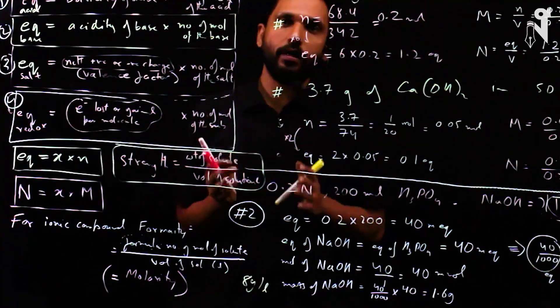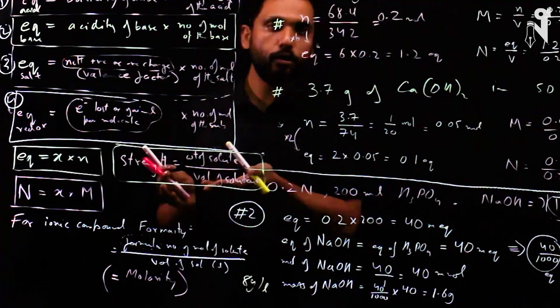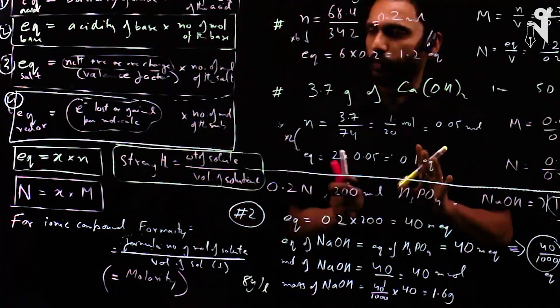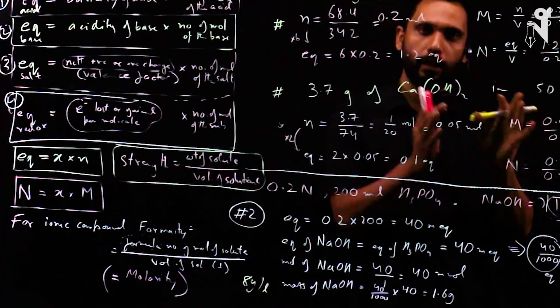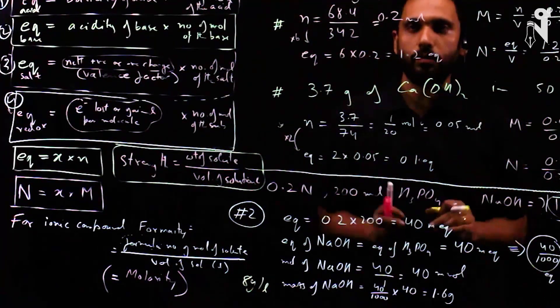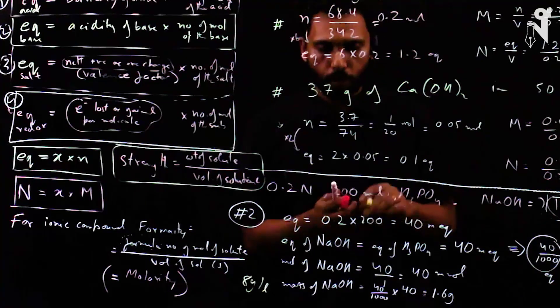If they say equivalents per liter it is your normality. If they say grams per liter then it's your strength. So we shouldn't bother that much about the other terms - looking at the units and looking at the names of those terms, it will be pretty much evident what they are talking about.